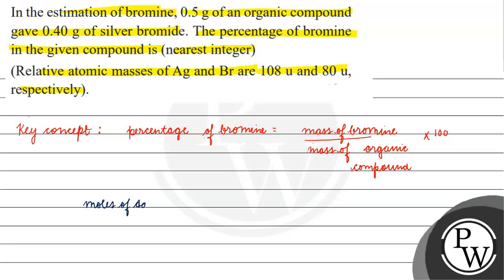Now, moles of silver bromide will be equal to 0.40 gram divided by 188 gram per mole. The molar mass is 108 gram per mole plus 80 gram per mole, which equals 188 gram per mole. Dividing 0.40 by 188 gives us 0.0021 moles of silver bromide.